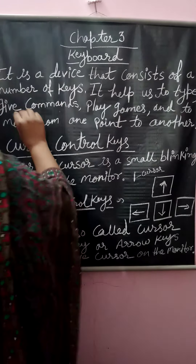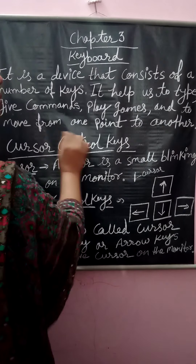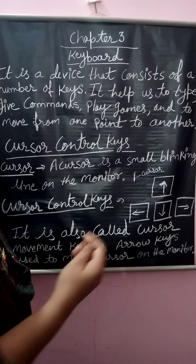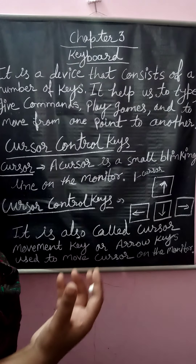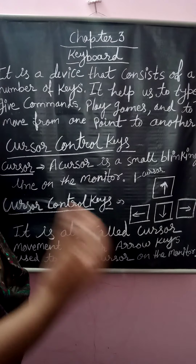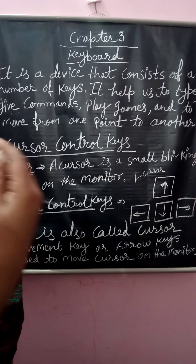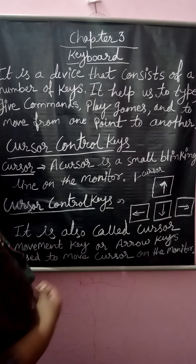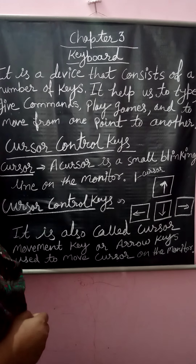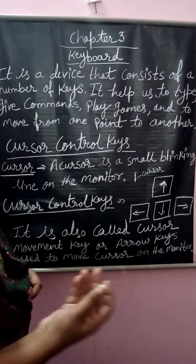The keyboard helps us to type given commands, play games, and move from one point to another. It consists of so many keys and is used to type commands or write alphabets on the monitor. With the help of the keys, we can play games and also move the pointer from one place to another.